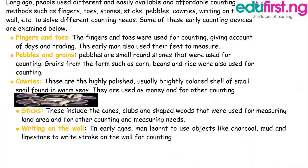Early counting devices. Long ago, people used different, easily available and affordable counting methods such as fingers, toes, stones, sticks, pebbles, cowries, and writing on the wall to solve different counting needs. Some of these early counting devices are examined below.